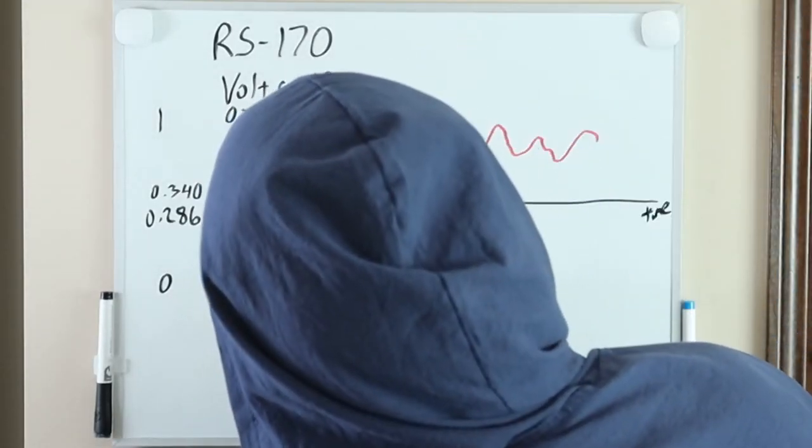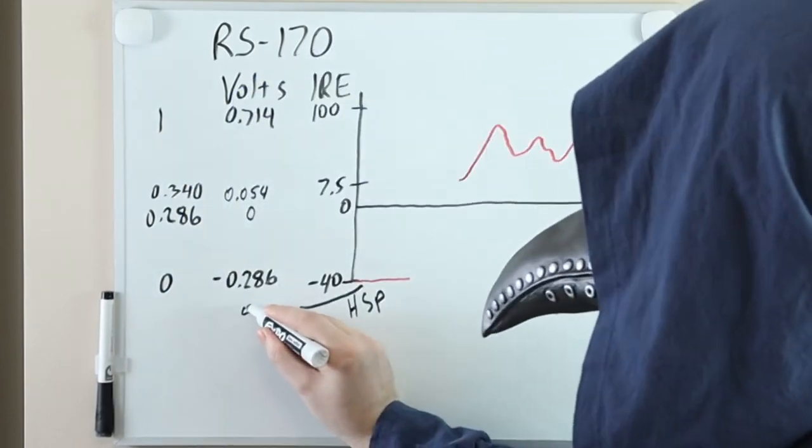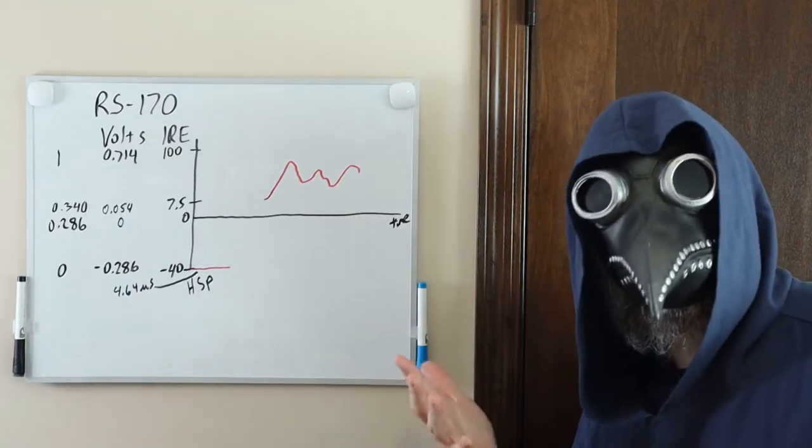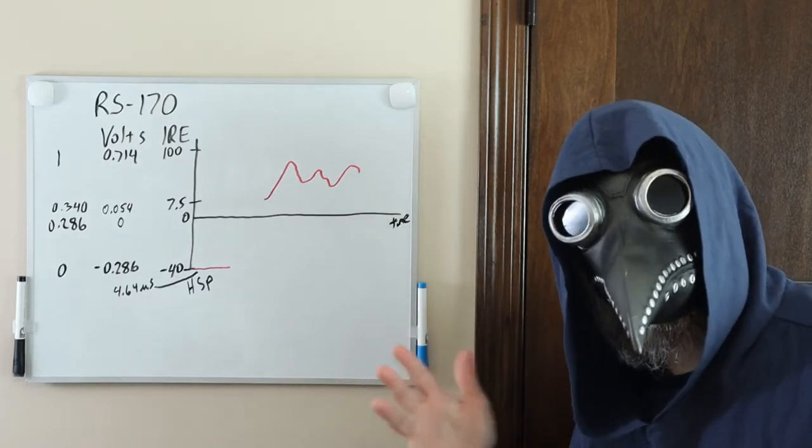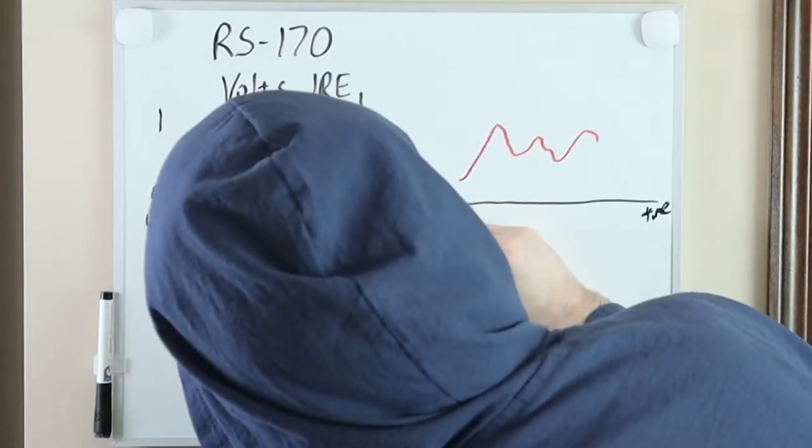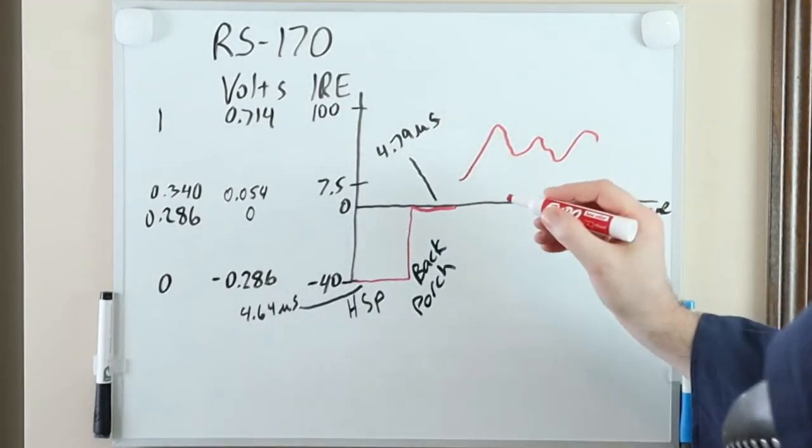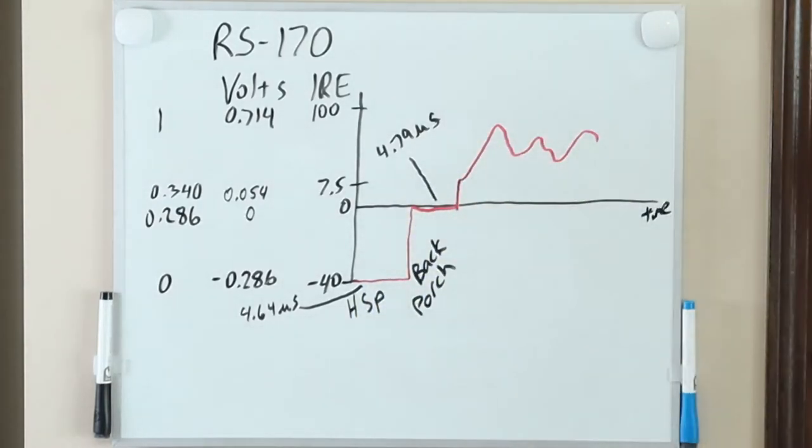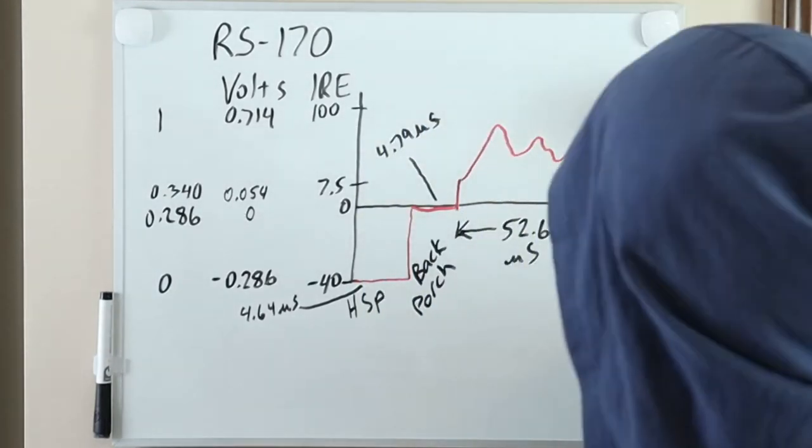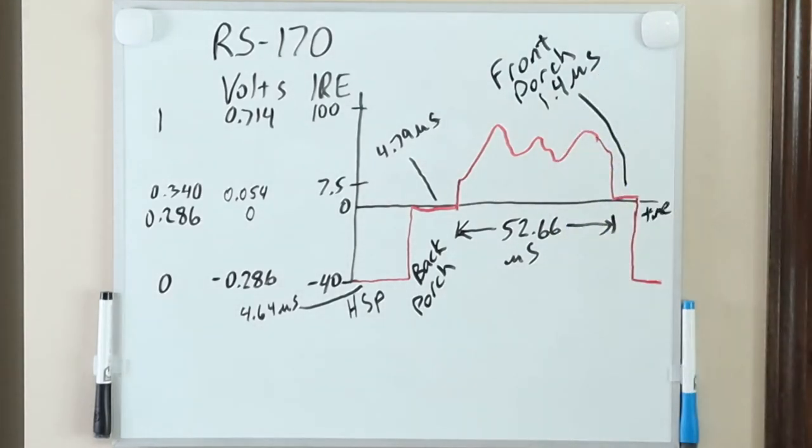So, to move the beam from the right back to the left side, we send a horizontal sync pulse for 4.64 microseconds, which is negative 40 IRE or negative 286 millivolts. We use this negative voltage to ensure the electron beam is blacker than black, so we don't disturb the image when moving back to the left. From this point, we have what is called the back porch before drawing the next line. The back porch is 0 IRE or 0 volts and is held for 4.79 microseconds. After this, we can send a varying voltage from 7.5 to 100 IRE to draw the line, and we have about 52.66 microseconds of drawing time. When the line is finished being drawn, we enter the front porch for 1.4 microseconds at 0 IRE, which is 0 volts. From here, we repeat for the next line.